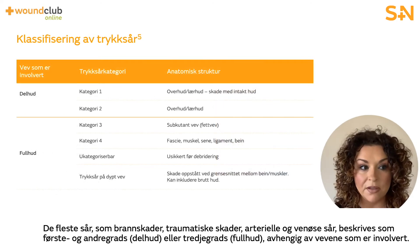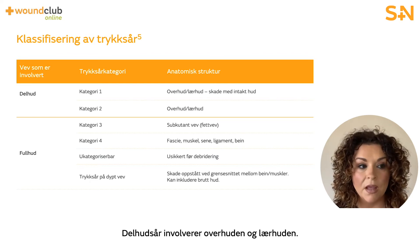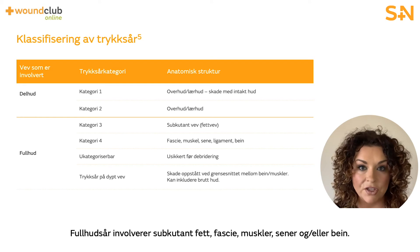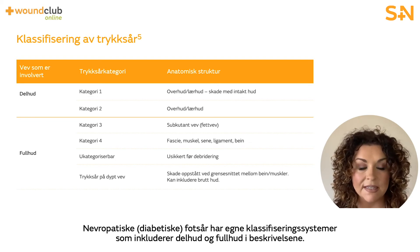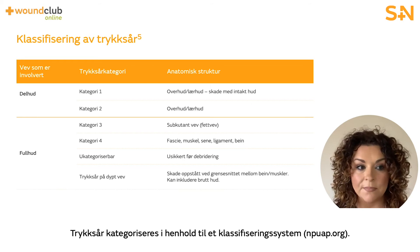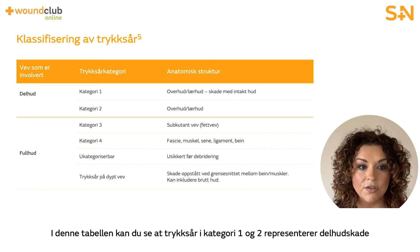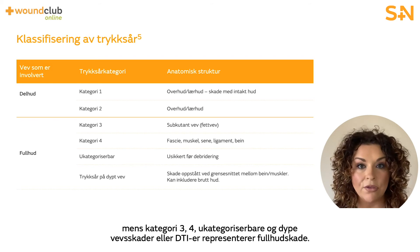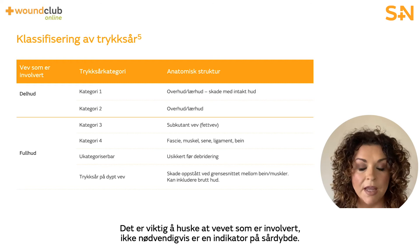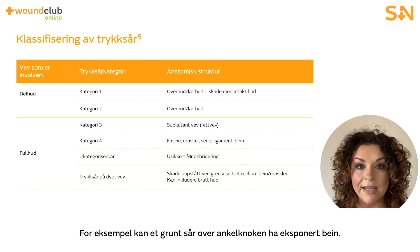Most wounds such as burns, traumatic injuries, and arterial and venous ulcers are described as partial thickness or full thickness depending upon the tissues involved. Partial thickness wounds involve the epidermis and the dermis; full thickness wounds involve the subcutaneous fat, fascia, muscles, and/or bone. Neuropathic or diabetic foot ulcers have a separate classification system. Pressure ulcers are categorised so that category 1 and 2 represent partial thickness tissue damage, whereas category 3, 4, unstageable, and deep tissue injuries represent full thickness tissue damage. The tissue involvement is not necessarily an indicator of wound depth — for example, a shallow wound over the malleolus may have exposed bone.